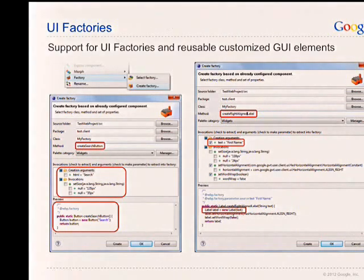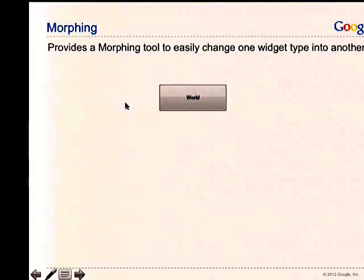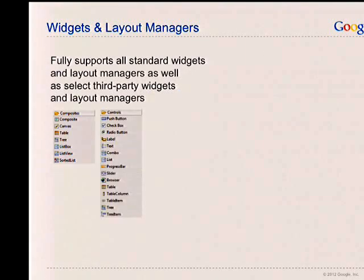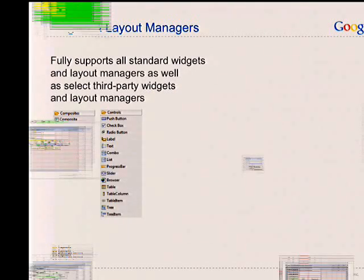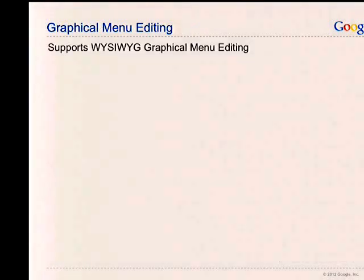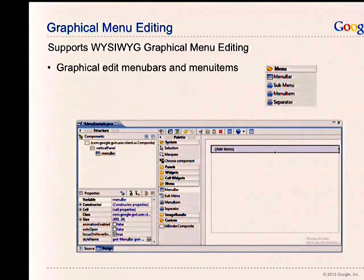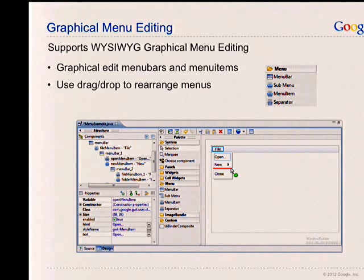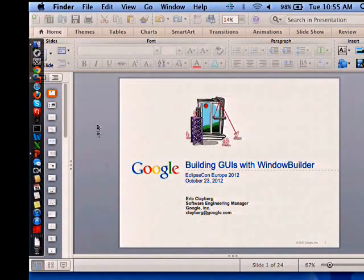The support for morphing — if you have widgets you need to replace, even if you've already added event handlers, you can easily morph any kind of widget into another. Support for all different types of layout managers — absolute layout had one kind of feedback, Form Layout had another, Grid Layout had a third. Each layout manager has its own custom UI feedback specific to that layout manager. And finally there is support for graphical menu editing — you can add menu bars and graphically add submenus, cascades, and so on.